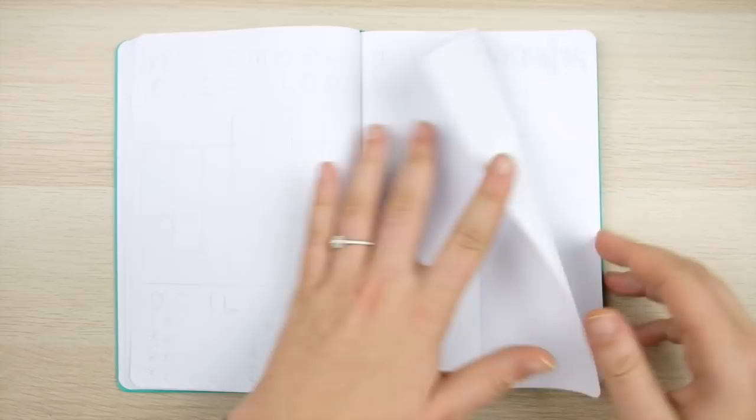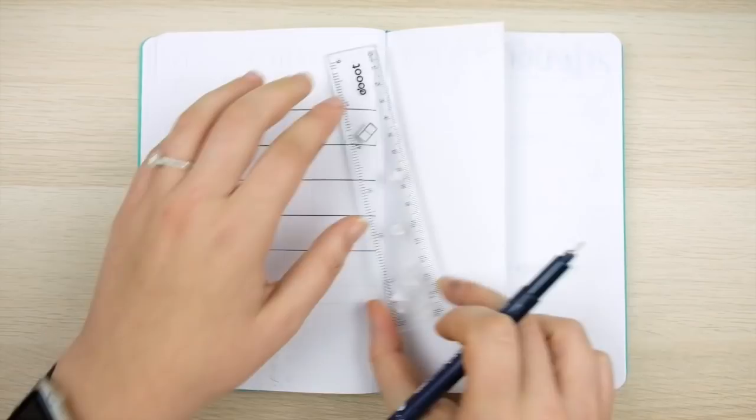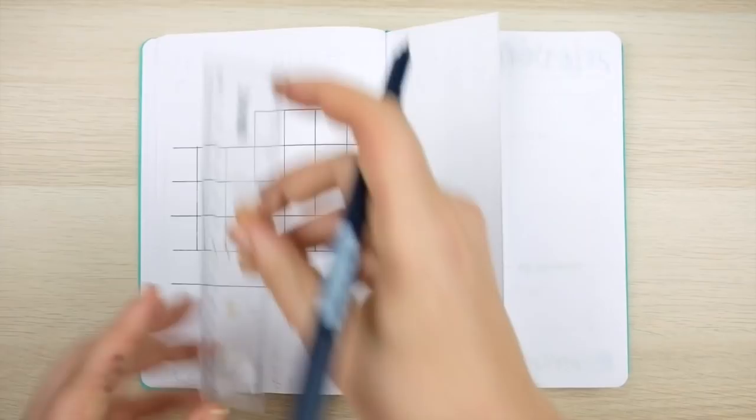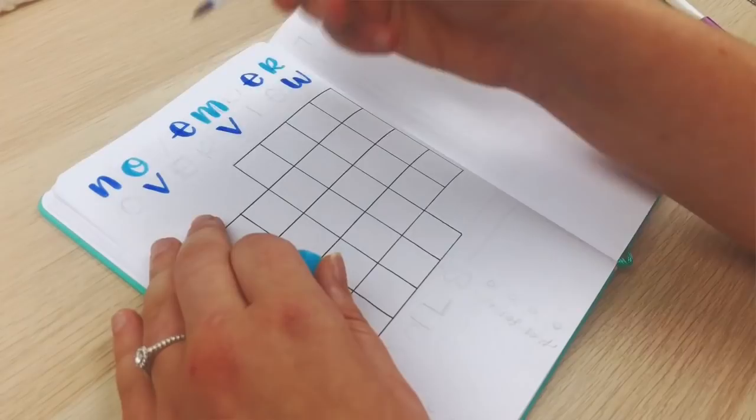All right so now we're on to the last monthly log that I'm going to be showing you guys which is going to be a space themed calendar style with a dutch door. All this means is that I'm going to be cutting the right side page in half which gives me this little extra flap dividing up my spread and you'll see how I'll use this a little bit later on.